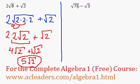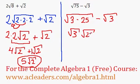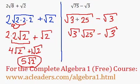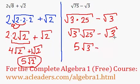We have √75 minus √3. Since 75 is 3 times 25, we get √(3 times 25) minus √3. We can split the radical into two: √3 times √25. Since √25 is just 5, we get 5 times √3, which is 5√3, and we're still subtracting that √3 on the right.